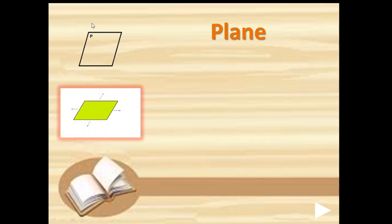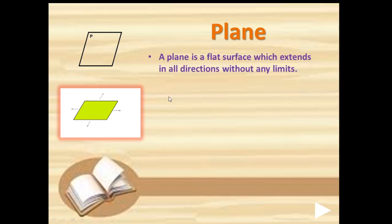We have a diagram showing its extension in all directions. In the first diagram, we can see a plane with the name P. In the second diagram, we have a plane which shows the symbol of extension on all four sides, showing that the plane can be extended in all four directions to any limit. A plane is a flat surface which extends in all directions without any limits — whether it be a wall, your floor, or the page of a book.